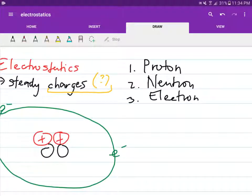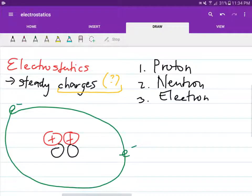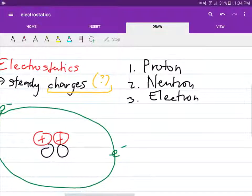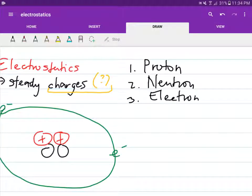So charges are the property that differentiates these three subatomic particles. So protons has a positive charge of plus 1e. So we will talk about later what is this constant e. A neutron has no charge, so it has zero e, or just zero. An electron has a charge of minus 1e.